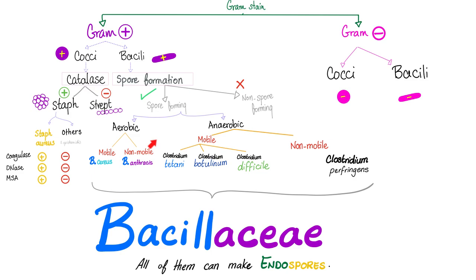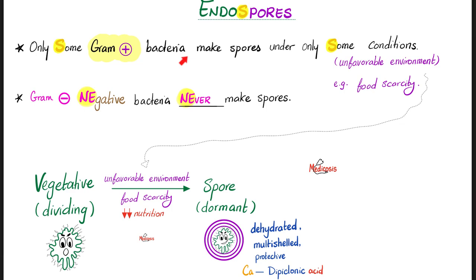Only some gram-positive bacteria make spores under some unfavorable conditions, but as for gram-negatives, they never make spores. Here's the bacteria in the dividing state when everything is hunky-dory. But when food gets scarce and the environment becomes unfavorable, the bacteria will surround itself by a coat — and now it's called a spore. The spore is hard, and it has calcium bound to dipicolinic acid. Your bones have calcium, your bones are strong — same thing with the spore.